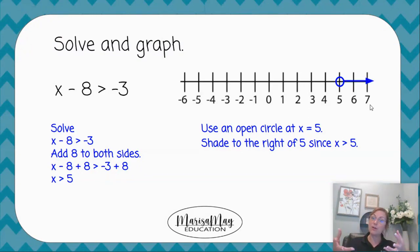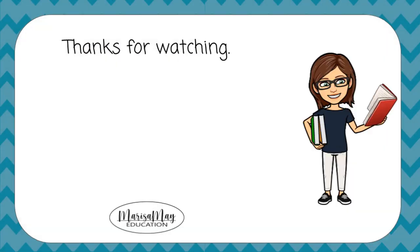And this is what our graph would look like with that open circle at 5 and then the shading going to the right because of x being greater than 5.